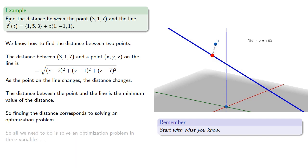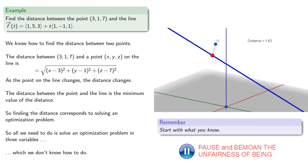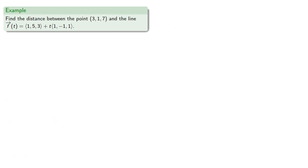So all we need to do is solve an optimization problem in three variables, which we don't know how to do. While we don't know how to solve optimization problems in three variables, we do know that we have the vector equation for our line. And the vector equation corresponds to the parametric equation for x, y, and z.